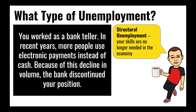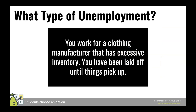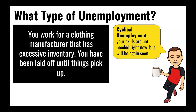Second example: you worked as a bank teller, but in recent years more people use electronic payments instead of cash. Because of this decline in volume, the bank discontinued your position. You would be structurally unemployed because your skills are no longer needed — they don't need people to manually process payments when computers can do it. You'd have to find new skills to get employed again. Third: you work for a clothing manufacturer with excessive inventory and have been laid off until things pick up. You would be cyclically unemployed — people still need clothes manufactured, but they're not buying right now because the economy is slowing down.